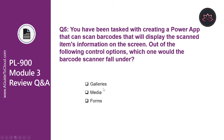Let's look at question number five. You have been tasked with creating a Power App that can scan barcodes and display the scanned item's information on the screen. Out of the following control options, which one would the barcode scanner fall under? Is it forms? No. Is it galleries? No. The correct answer is media. The barcode scanner control is part of the media category of controls. This control can be used to scan barcodes of various types and pass information about the barcodes to the Power App. Additional functions can then use that barcode information to perform additional tasks.